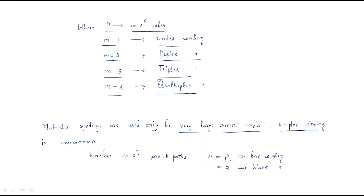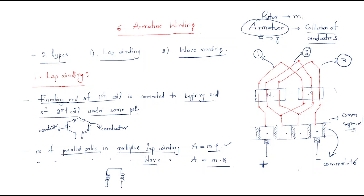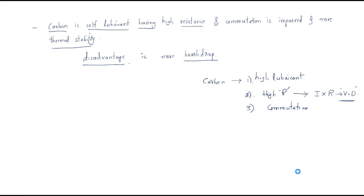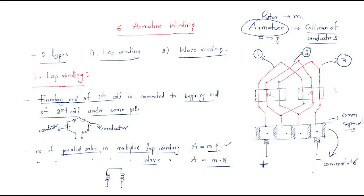Simplex winding is the most common type; multiplex windings are generally not used. Therefore, for simplex winding, the number of parallel paths A equals P in lap winding, and A equals 2 in wave winding. This concludes the topic of armature winding and lap winding.